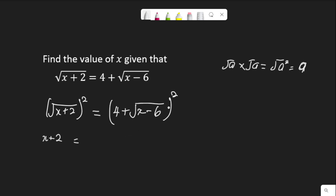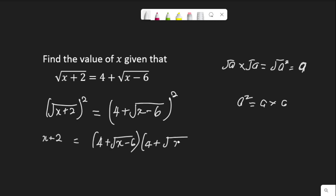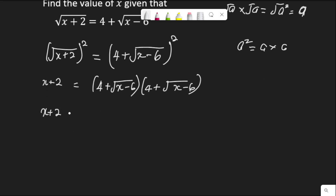So, equal to — but on the right hand side, because of this number here, it will not work that way. I'm going to expand this bracket. We know that a squared is a times a. So this 4 plus root x minus 6, squared, means 4 plus root x minus 6, times 4 plus root x minus 6. By expanding this bracket, 4 times 4 is 16; 4 times root x minus 6 is 4 root x minus 6; root x minus 6 times 4 is again 4 root x minus 6; and root x minus 6 times root x minus 6 is x minus 6.